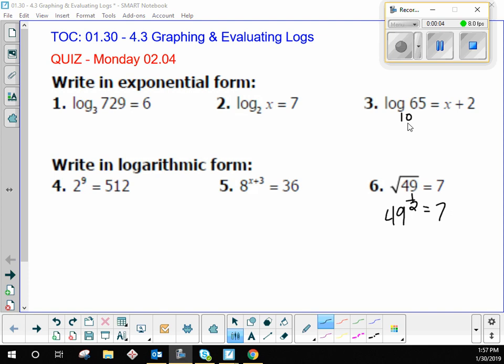Alright, what did you put for number 1, class? 3 to the 6 equals 729. You lassoed, you started with the base, you went around. Who got that? Perfect.